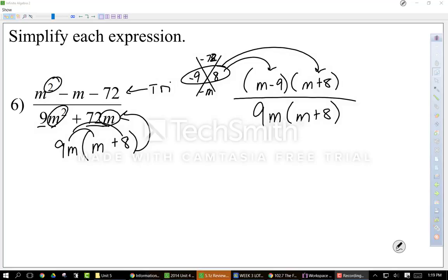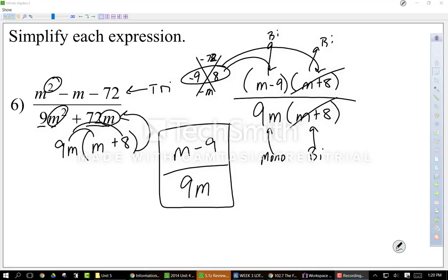Whoa, this is pretty cool. Now, if you look at it, I have a binomial here, a monomial here, a binomial here, and a binomial here. Well, my two binomials, m plus 8s, are the exact same. So I can cancel them out because I'm dividing. Remember, I can cancel things out that are the same. So what do I have left? I have m minus 9 over 9m as my final answer for 6.